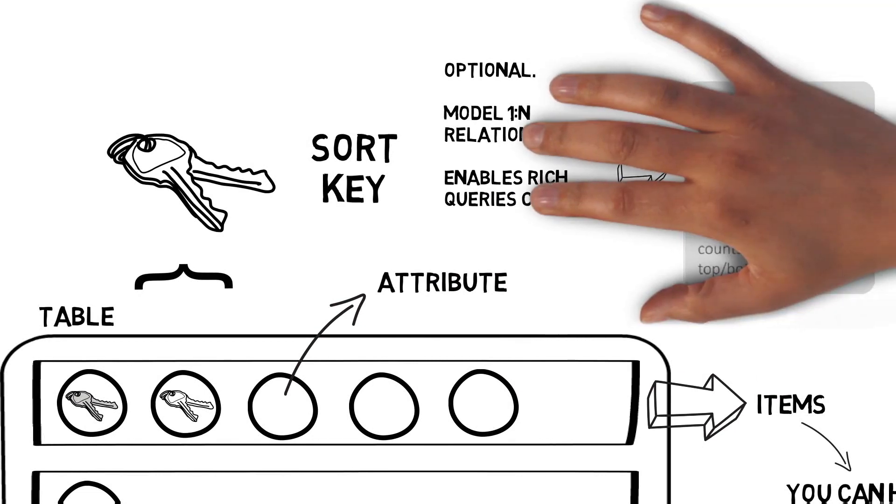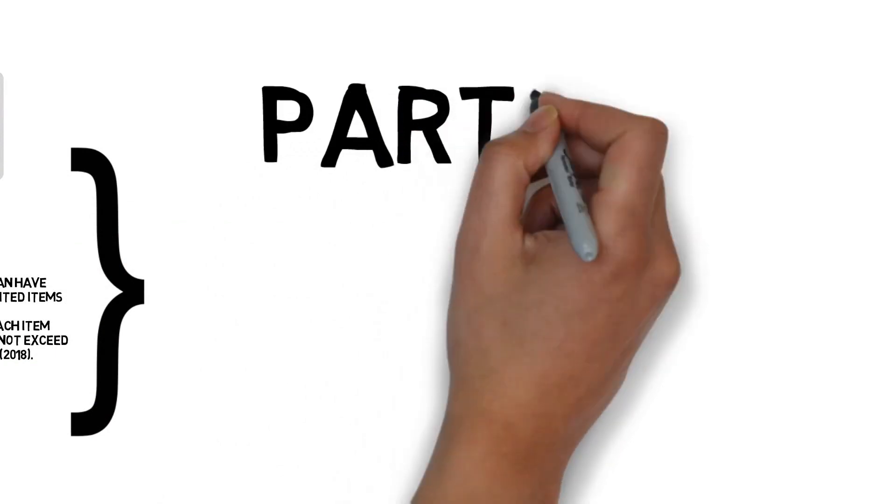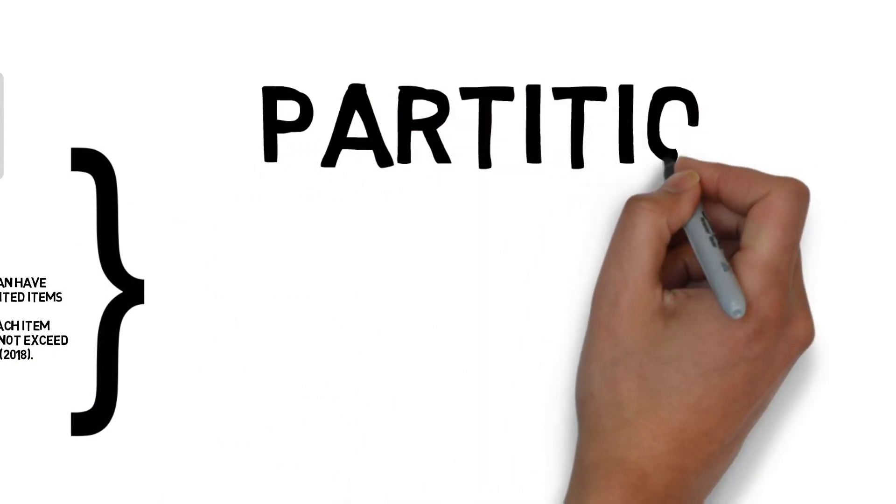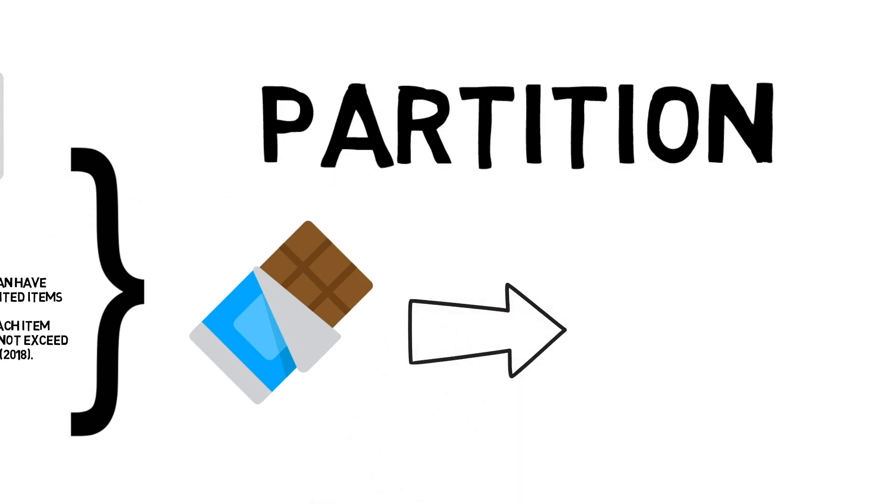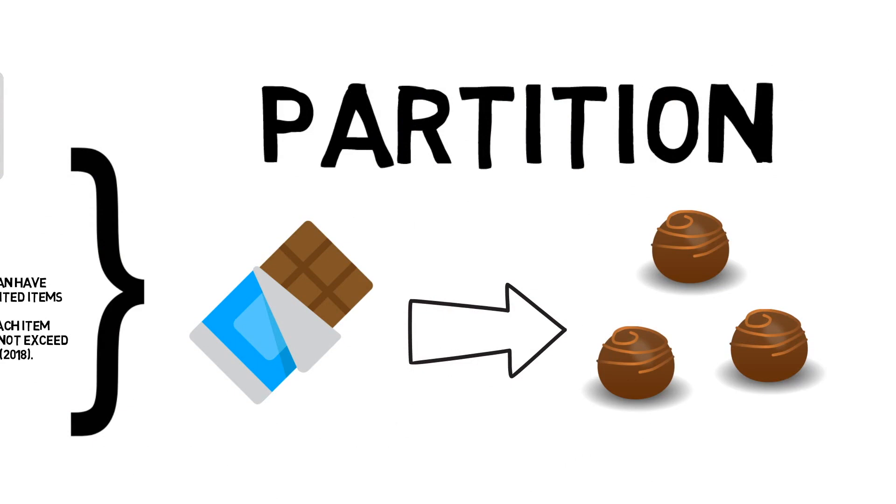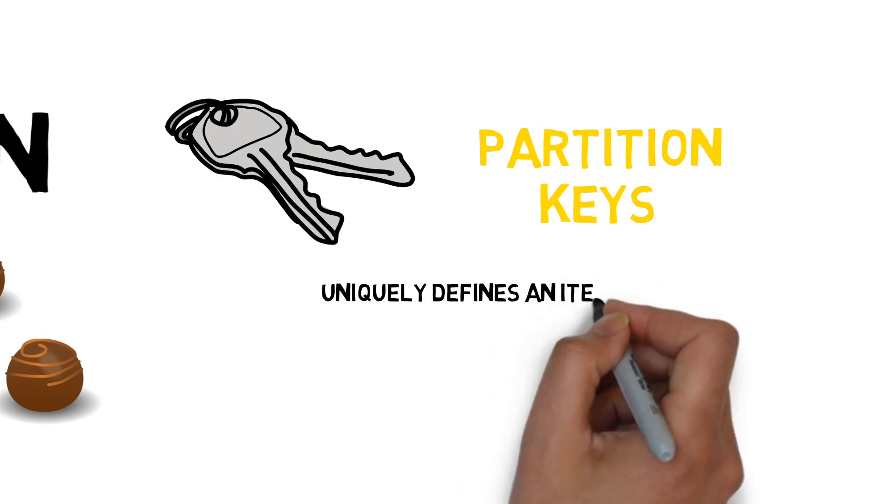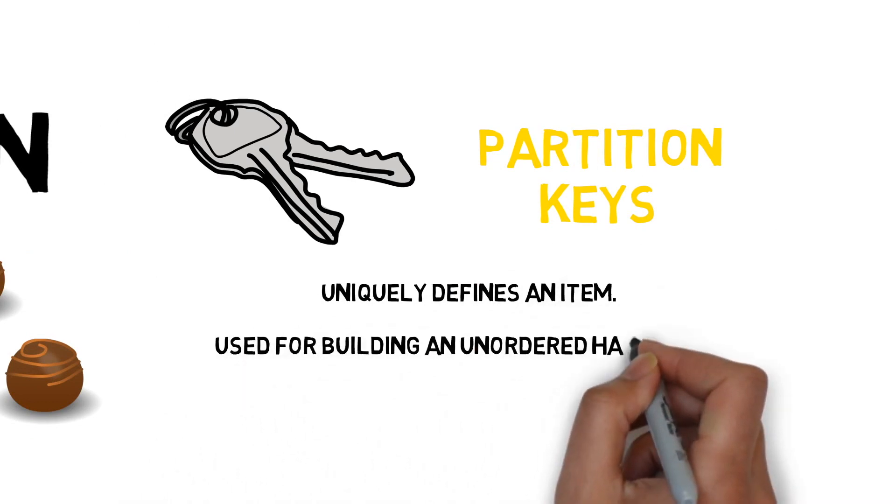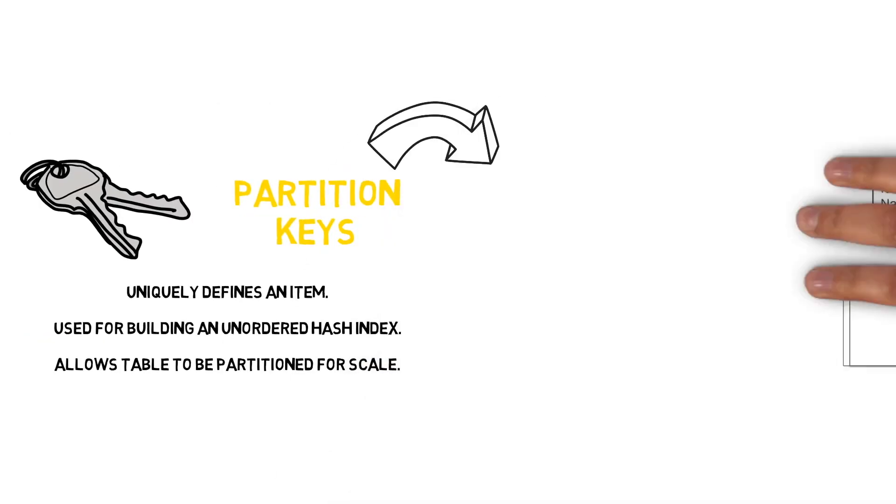Let's talk about partitioning. DynamoDB uses partitioning of the tables, meaning the tables are broken up into smaller subsets so we can query our data faster because there is less data to scan. Partition keys uniquely define an item for building an unordered hash index, allowing our tables to be partitioned for scale.